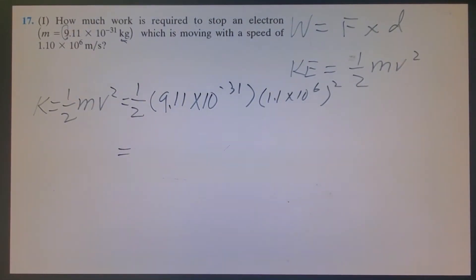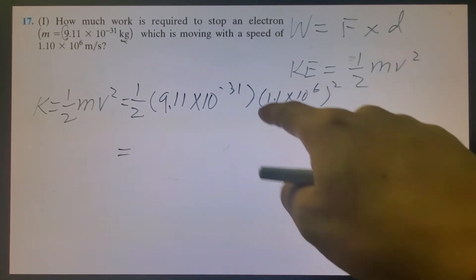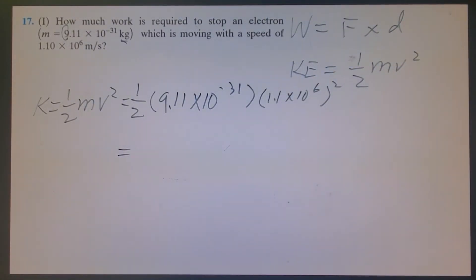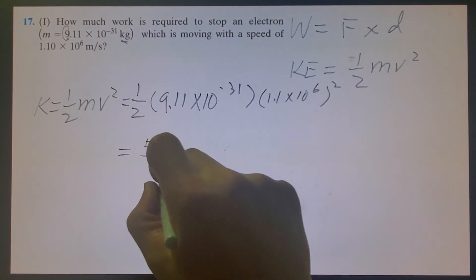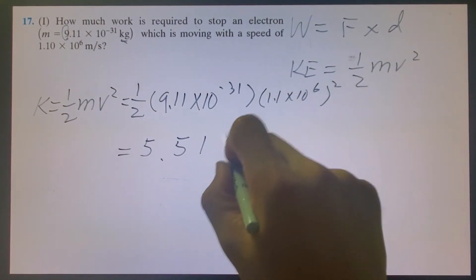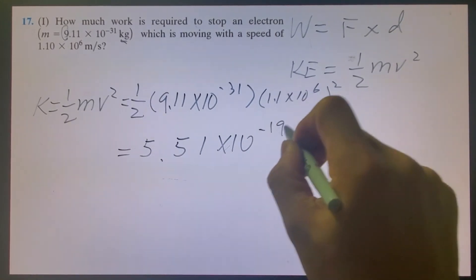If you do everything, I'm going to do it now. It will be half, that is 0.5 times 9.11 times 10 raised to the negative 31. You have to put parentheses when you enter the numbers in your calculator. Times 10 raised to the 6th power and then square. The kinetic energy, based on my calculation, is 5.51 times 10 to the minus 19 joules.